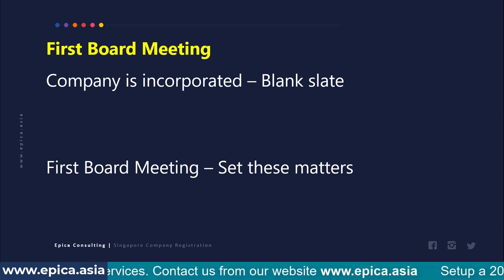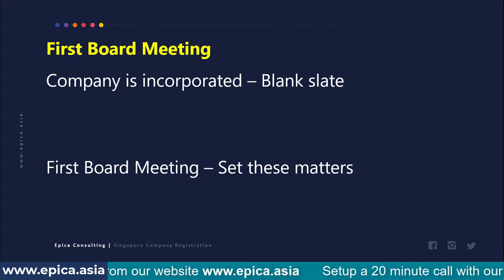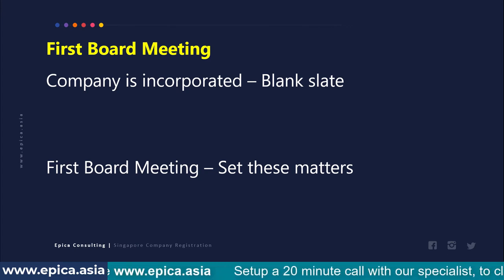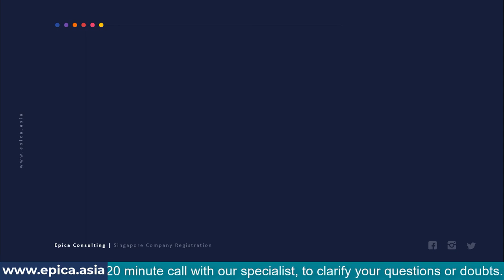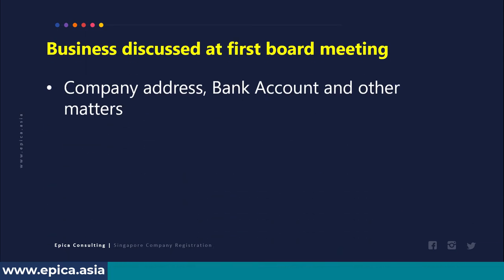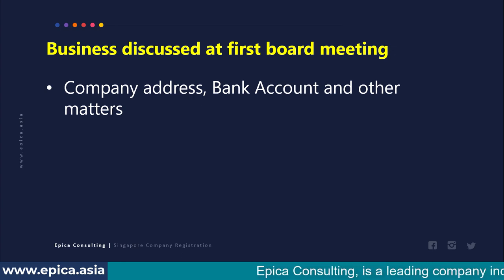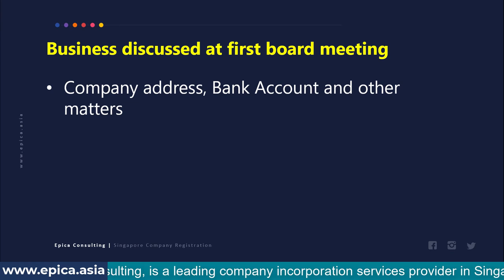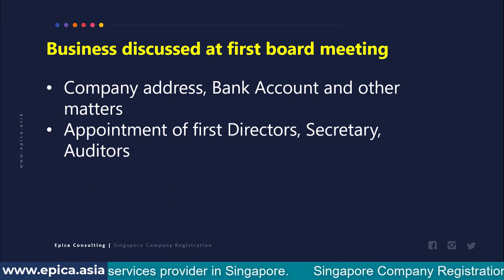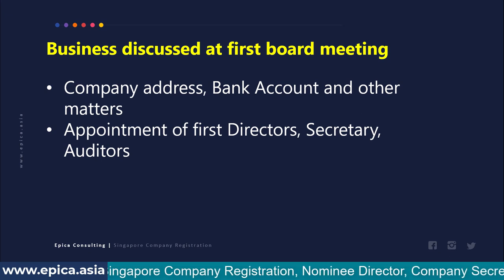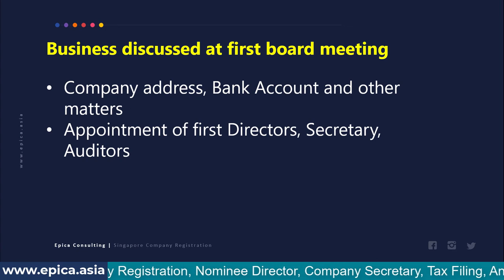In the first board meeting, all matters about the appointment of officers and shareholders approval are discussed. The agenda is as follows: the first thing decided is the company's registered address, the bank with which the account will be opened, and any other matters related to merchant banking accounts or services relevant at that point of time. Then the appointment of the first director, secretary, and auditors will be done, specifically mentioned in the first board meeting resolution.